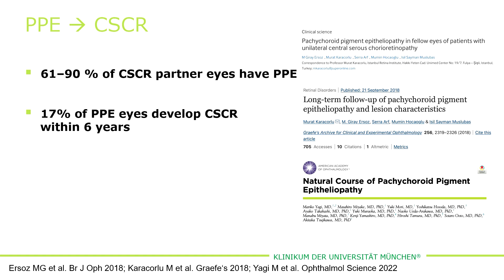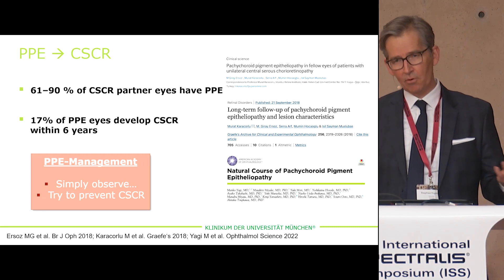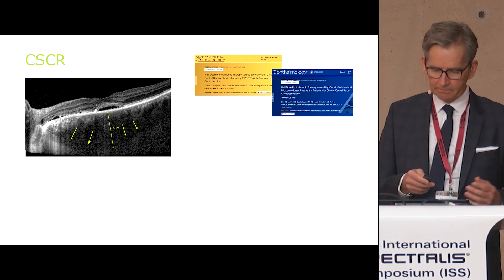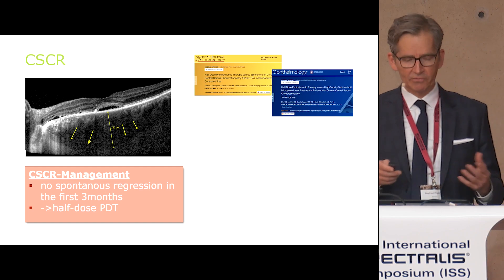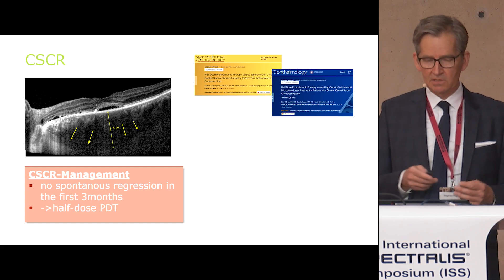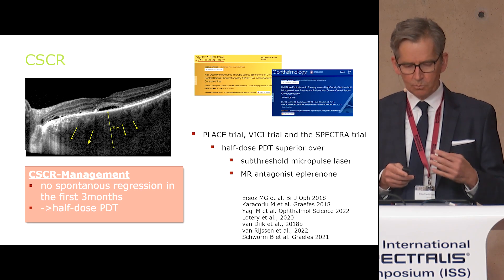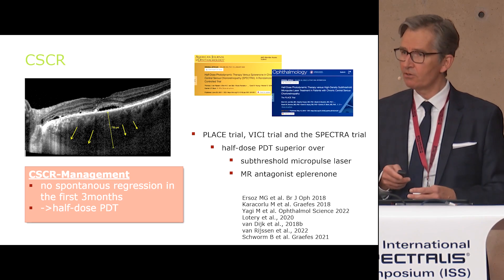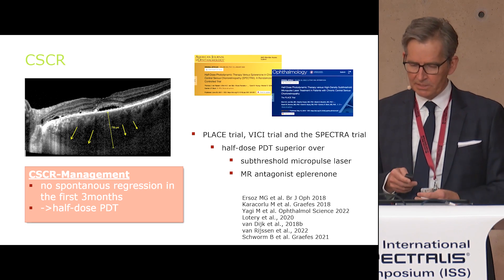What can be done — what's the management in this case? Unfortunately, more or less simply observe. However, we can try to avoid corticosteroid therapy and probably reduce stress. Once central serous choroidopathy is present and there's no spontaneous regression in the first three months, we have learned that half-dose PDT is very successful. We know that half-dose PDT is superior to sub-threshold micropulse laser treatment and that mineralocorticoid antagonists are worse compared to half-dose PDT.